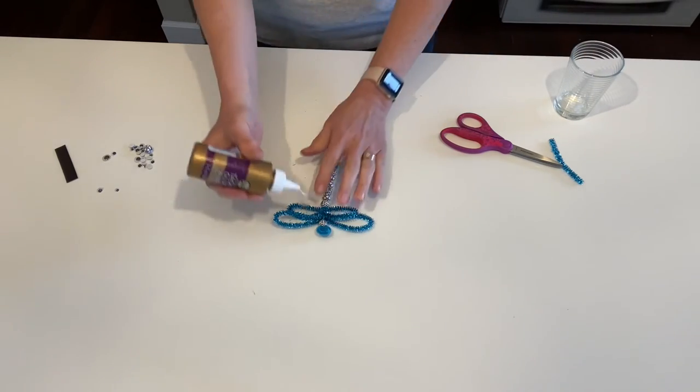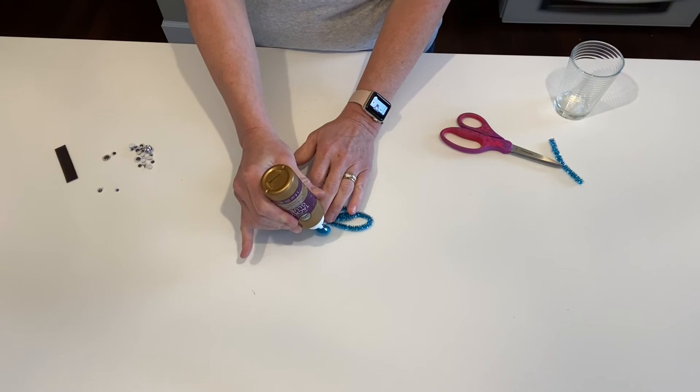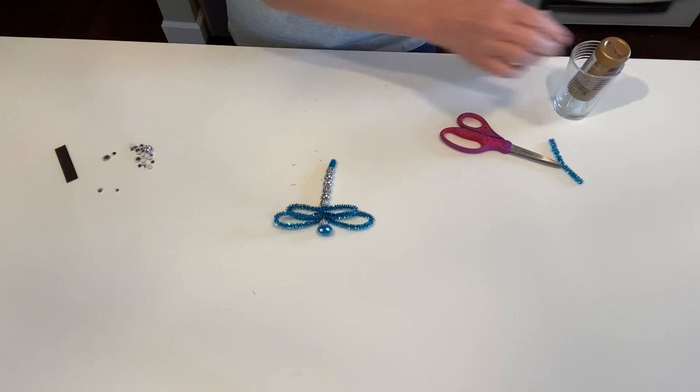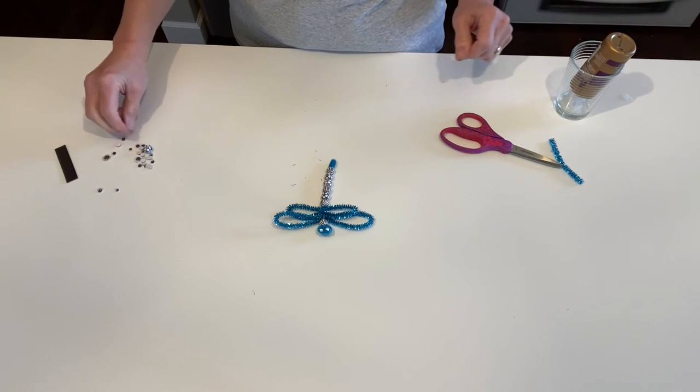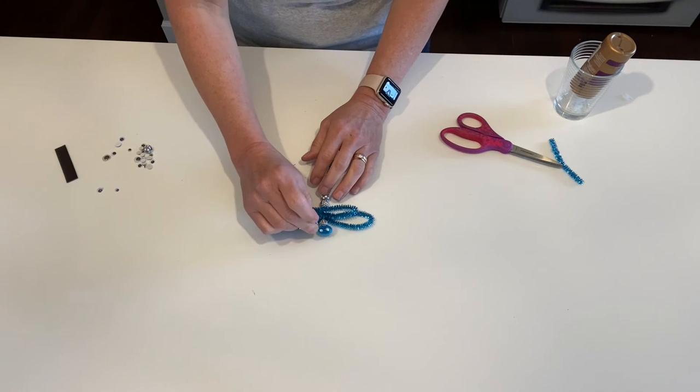Let's grab our glue. Put a couple little dots. Any glue will work - I use this one because it dries quicker so I can show you easier. Add a couple little eyes on there.